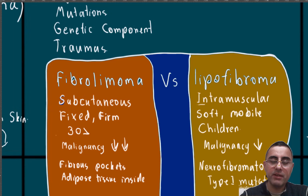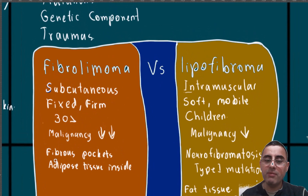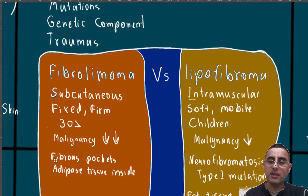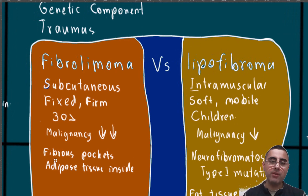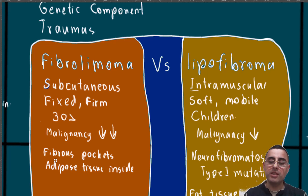Diagnostic criteria are different also. Fibrolipomas are described as fibrous pockets with adipose tissue inside, while lipofibroma is described as fat tissue interspersed with fibrous tissue. Fibrolipoma has more fibrous tissue, while lipofibroma has less fibrous tissue and more fat.